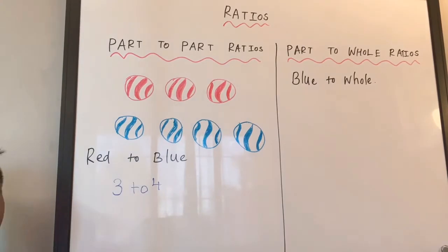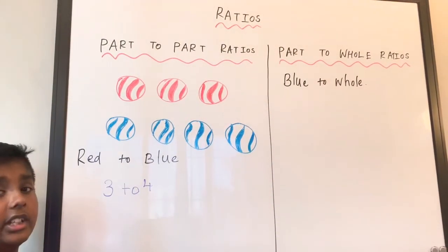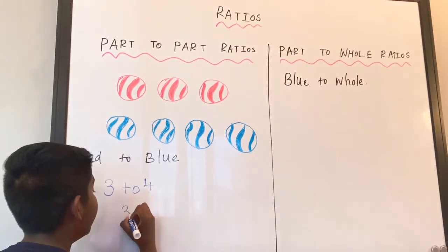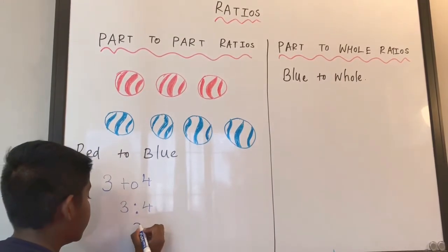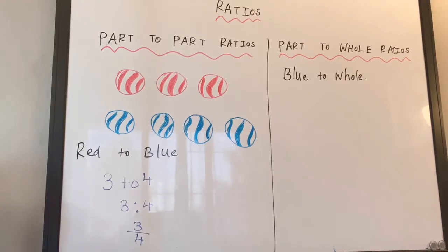In my last video I taught you we can write it in three ways. The first is three to four, or we can write 3:4, or we can write three over four. We can write any of these three forms.